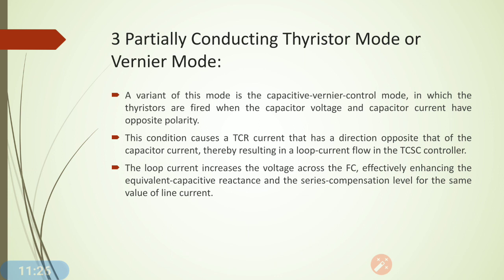One variant of the vernier mode is the capacitive vernier control mode, in which the thyristors are fired when the capacitor voltage and capacitor current have opposite polarity. Due to this condition, the TCR current has a direction opposite to that of the capacitor current, resulting in a loop current flow in the TCSC controller. This loop current increases the voltage across the fixed capacitor and enhances the equivalent capacitive reactance, thereby increasing the series compensation level of the transmission line.